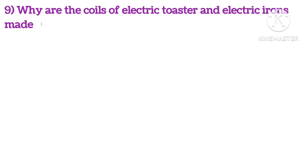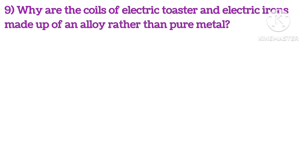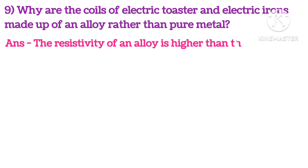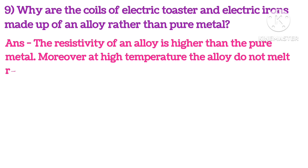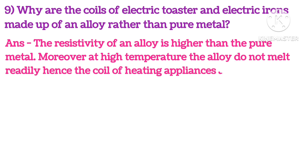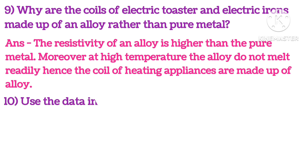Why are the coils of electric toasters and electric irons made of alloy rather than pure metal? The resistivity of an alloy is higher than that of a pure metal. Moreover, at high temperatures, alloys do not melt readily. Hence, the coils of heating appliances are made of alloy.